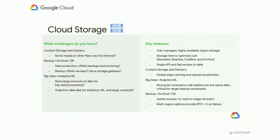First, Google Cloud Storage — our large-scale object storage product. Customers are normally using this for three different use cases. Content storage and delivery: if you want to store large amounts of media, video, and images and serve them out to customers or store them for later analysis, Google Cloud Storage is a great product for that. Customers like Spotify use this for storing and serving media content.